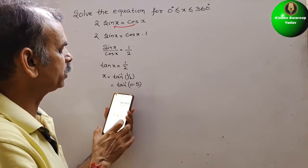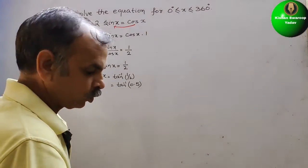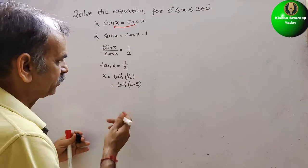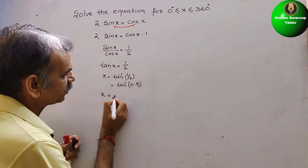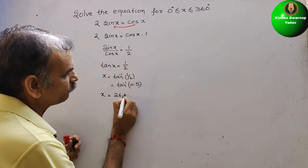So we will get 26.56. So now we can say x is equal to 26.56, that is equal to 26.6 degrees. This is your x.